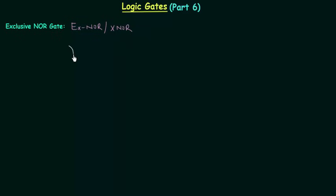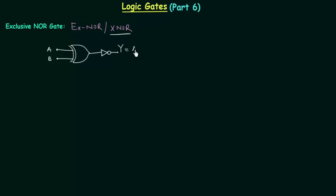First we will make a two-input XOR gate. This is the symbol of the XOR gate with inputs A and B. The output of this XOR gate will go to an inverter, and the output of this inverter is the output of the XNOR gate, equal to A XNOR B. In case of XOR we have a plus inside the circle, and in case of XNOR we have a dot inside the circle.